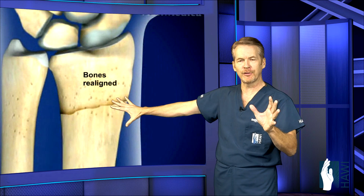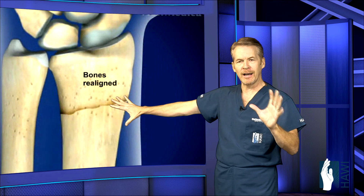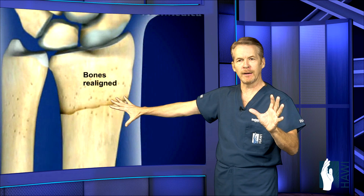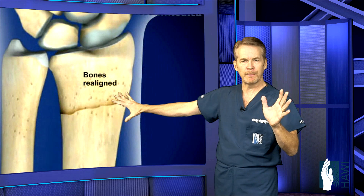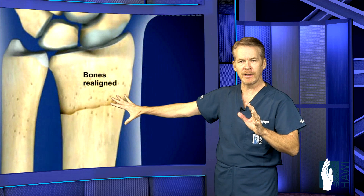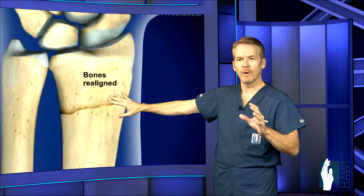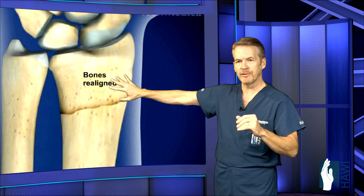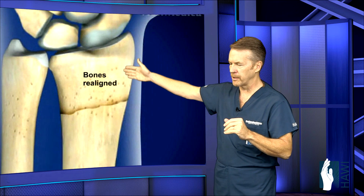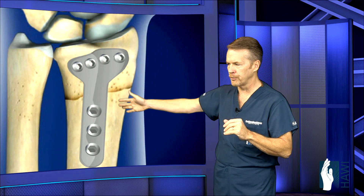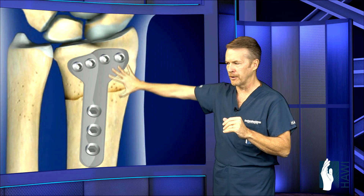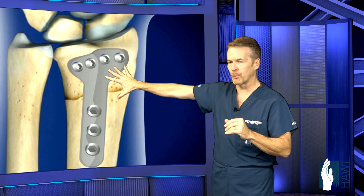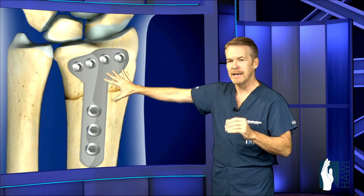In surgery, you're knocked out for about 30 minutes, we put the bones back in place, and then frequently we'll cut open the skin and go in and put a plate and screws — as you can see here — on the front of the wrist.